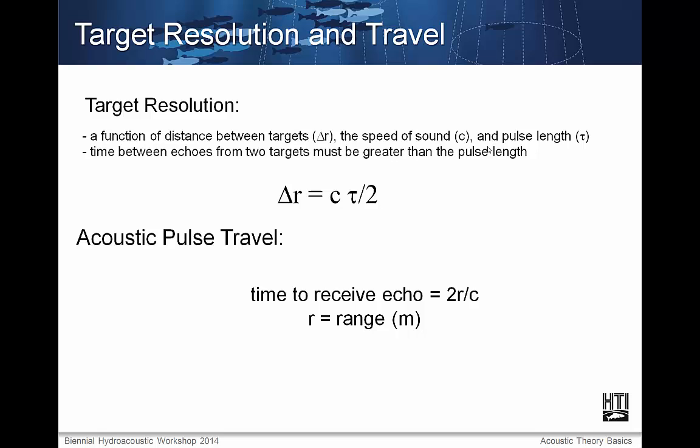Target resolution is a function of distance between targets (delta r), the speed of sound (c), and the pulse length (tau). The time between echoes from two targets must be greater than the pulse length. Specifically, delta r equals c times tau over 2, where time to receive echo is 2 times range over c.